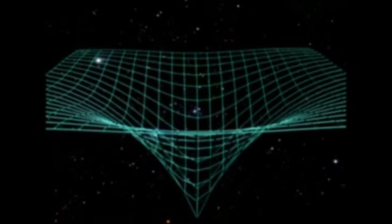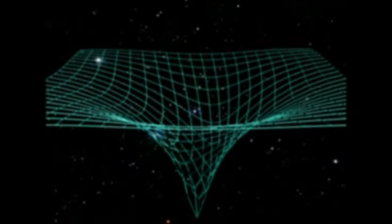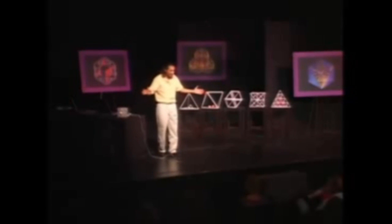And when space-time curves, it doesn't just curve, but it curls, just like water going down the drain, and that generates spin, angular momentum. And that's the source of the spin of all things.